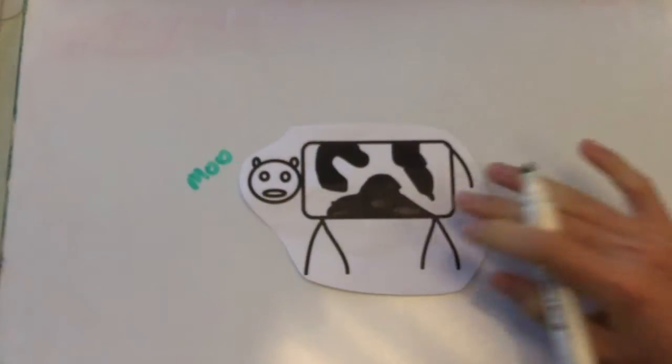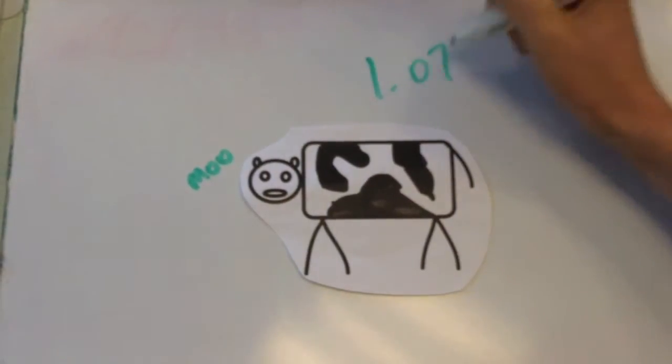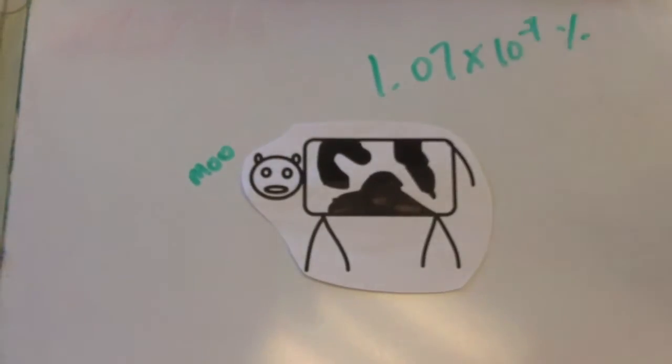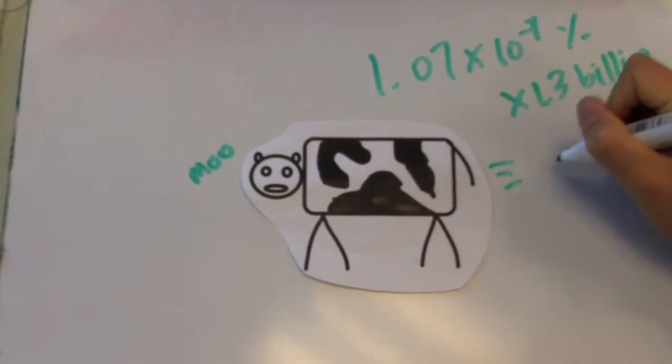Her farts account for 1.07 times 10 to the negative 7th percent of greenhouse emissions in the world. Let's multiply that by 1.3 billion. That's how many cows around the world.